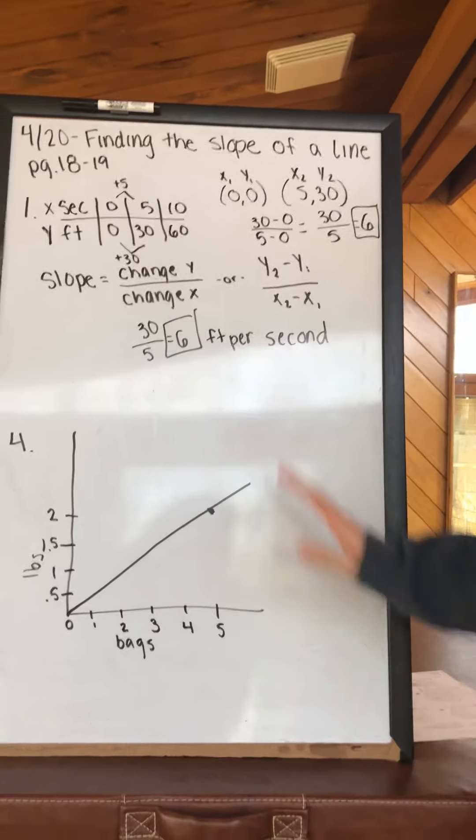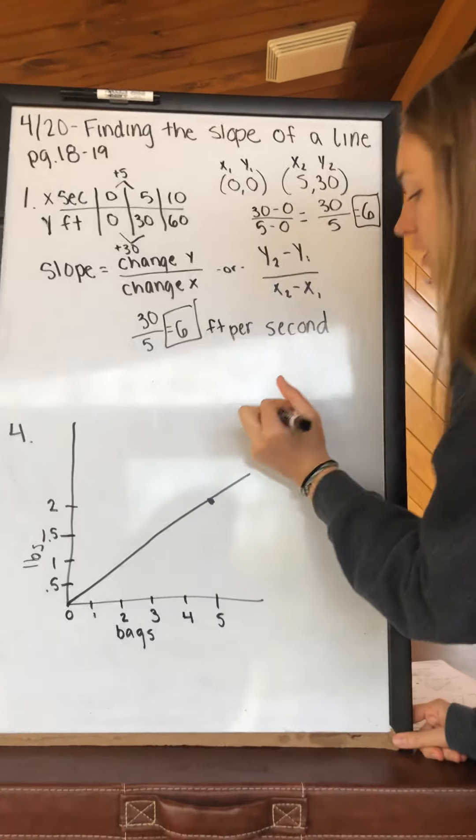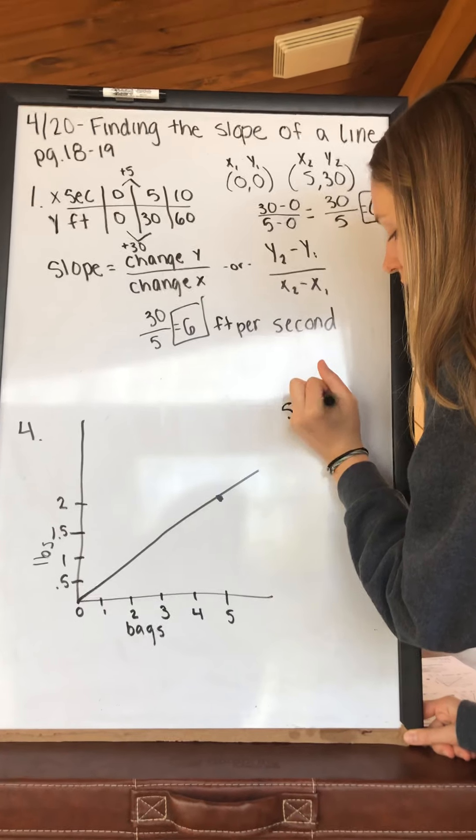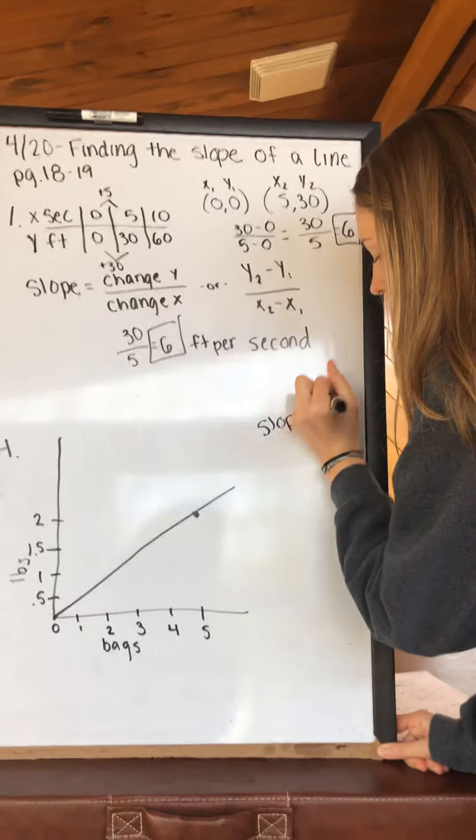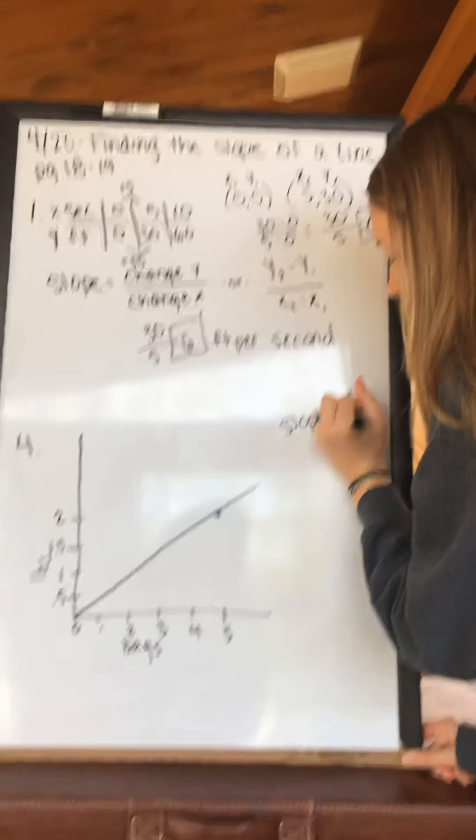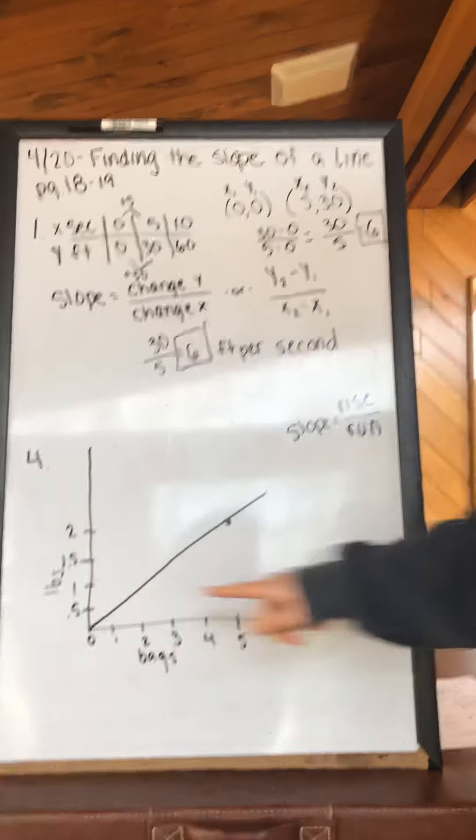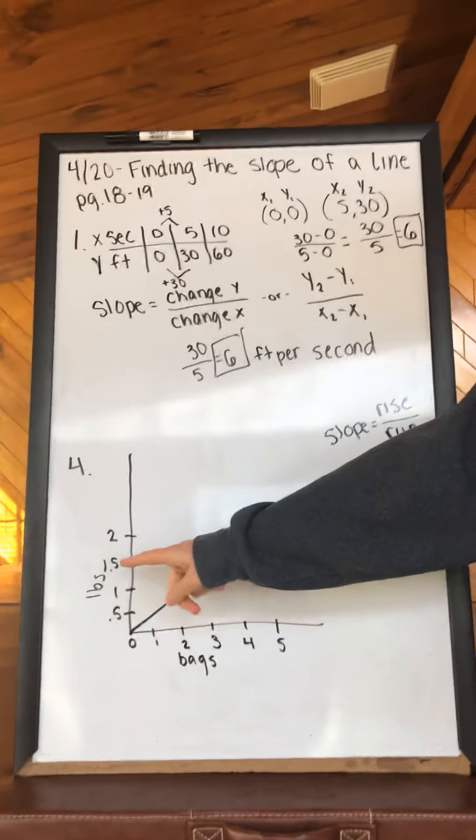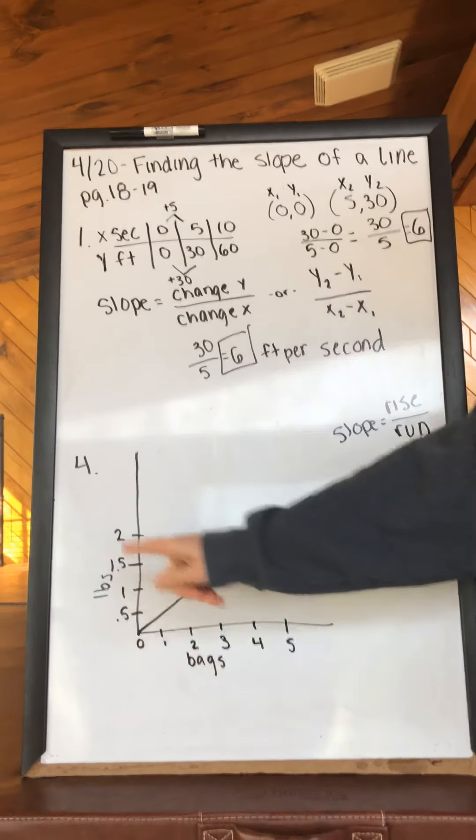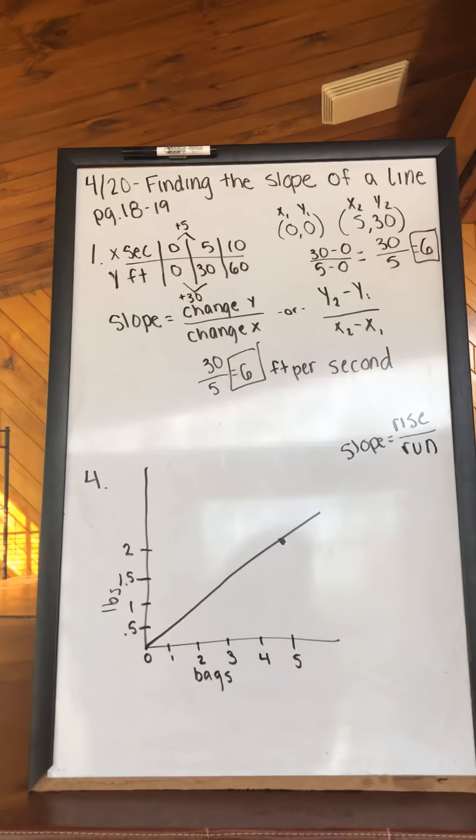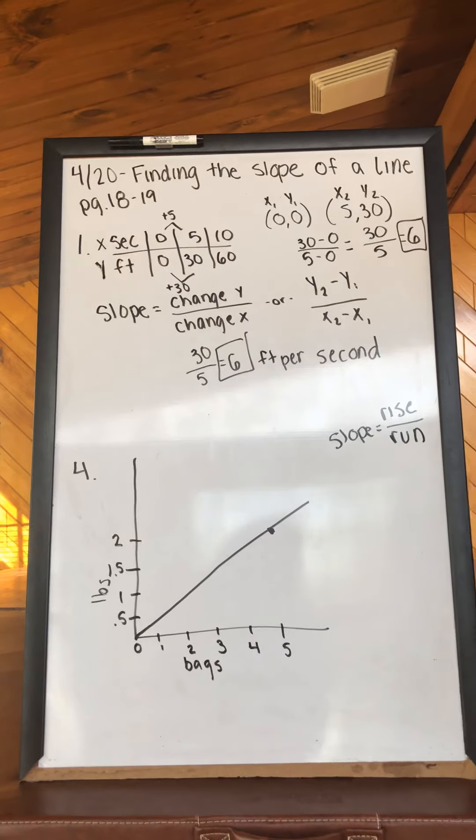When you are given a graph and you are trying to find the slope, we are going to count our rise over our run. The thing to be careful with is how our axes are labeled. If you notice in number 4, we are going by 0.5. You're going to try and find a point directly on the line.